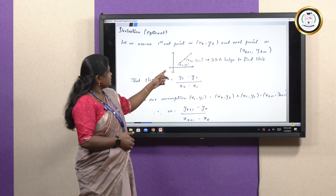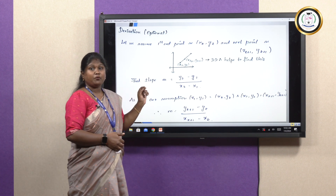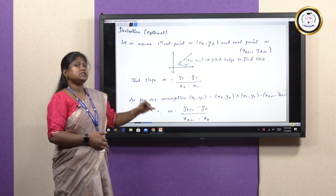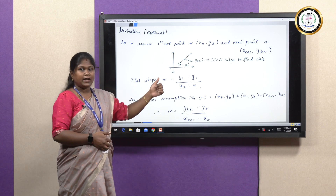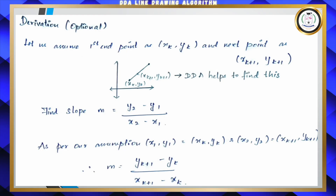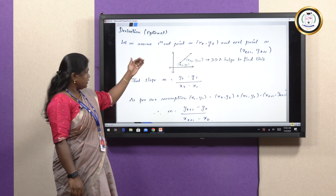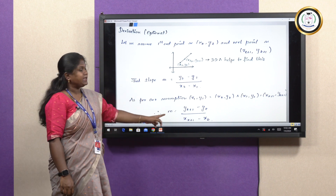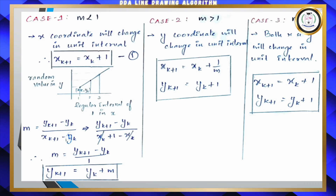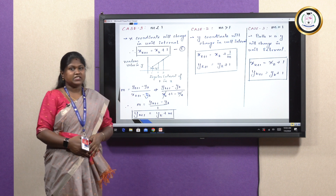As per our assumption, the starting end point is XK, YK and the next immediate point is XK+1 and YK+1. For X1,Y1 we have XK, YK, and for X2, Y2 we have XK+1 and YK+1. Substituting our coordinates in the slope formula gives us the result. DDA line drawing algorithm has three cases: Case 1 is M < 1, Case 2 is M > 1, and Case 3 is M = 1.